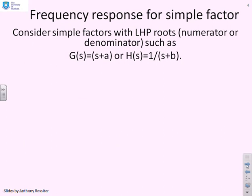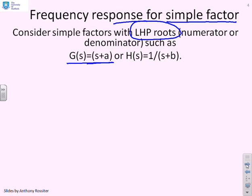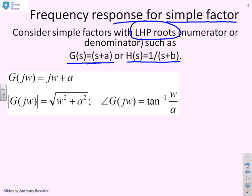We're going to start by giving some examples based upon simple factors. I should emphasize these simple factors have got left half plane roots — that's quite important, as you will see later, and the next video will look at right half plane roots. So let's consider G(s) = s + a, or an alternative transfer function which just has a single denominator factor: s itself.